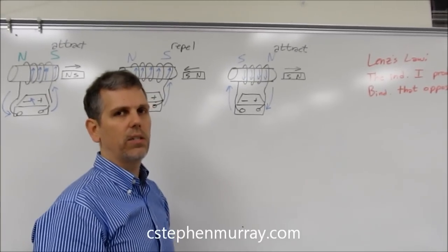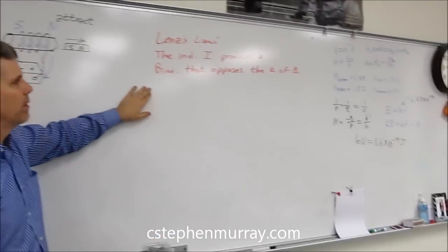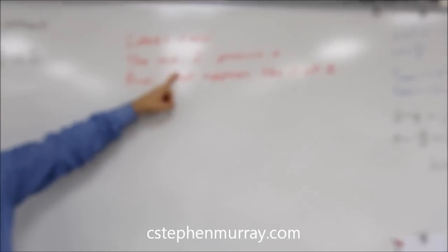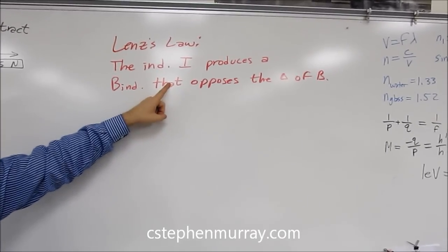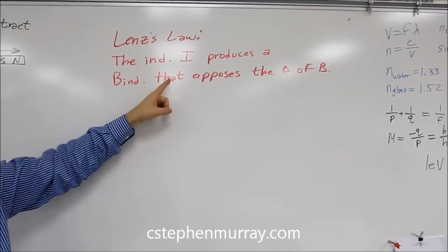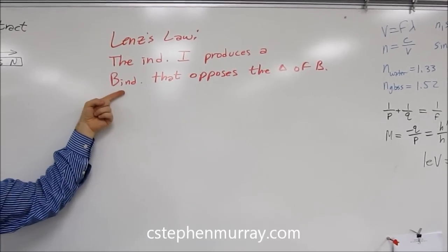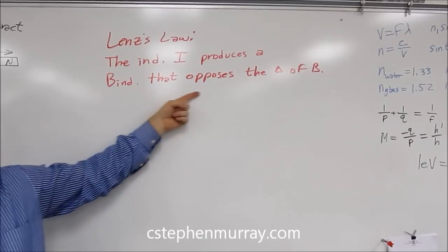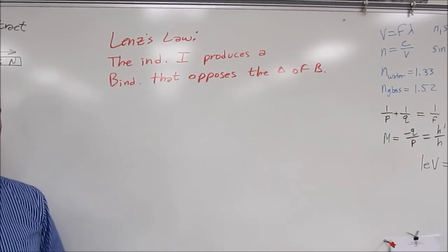This leads us to Lenz's law, which we have written in our physics kind of way. The induced current, I is current, just as we use in electricity. The induced current produces an induced magnetic field that opposes the change of magnetic field.